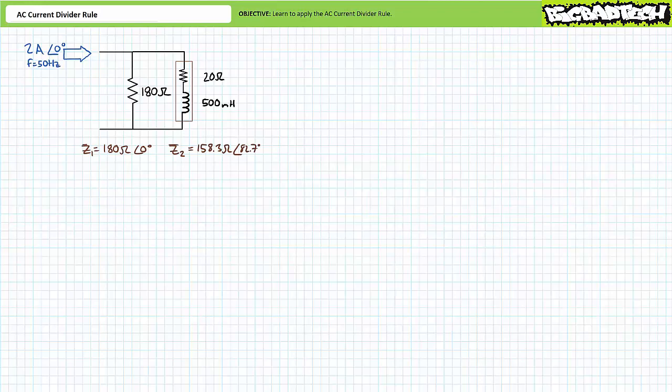Z2 is a non-ideal inductor with an impedance of 158.3 ohms at an angle of 82.7 degrees. Incoming current is known to be two amps at an angle of zero degrees. Let's say we're being asked to solve for current through each element using only the AC current divider rule.